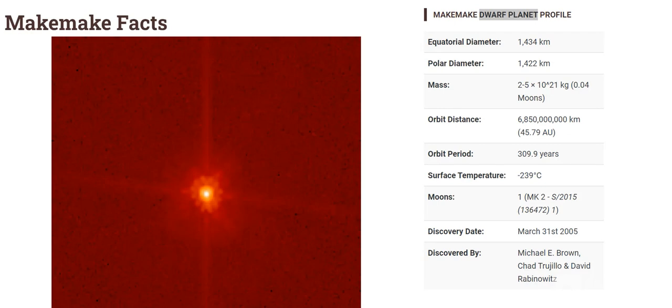Makemake dwarf planet profile: equatorial diameter is 1,434 kilometers and polar diameter is 1,422 kilometers. Mass is 25 into 10 to the power 21 kilograms. Orbit distance is 6,850,000,000 kilometers. Orbit period is 309.9 years.